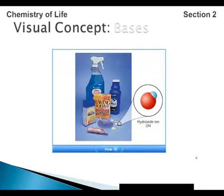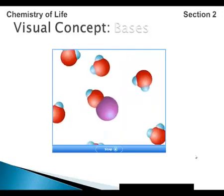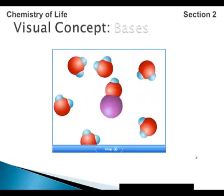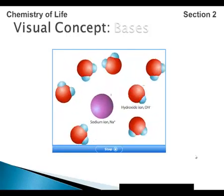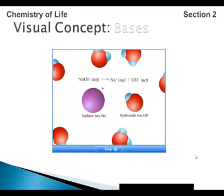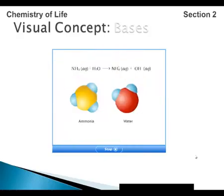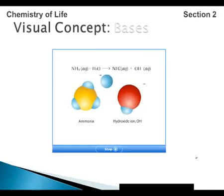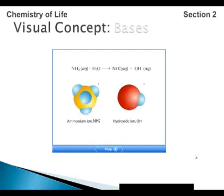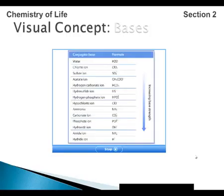Cleaners including soap and ammonia, baking soda, and antacids all contain bases. Bases give these products their slippery feel. Most bases are ionic compounds containing a hydroxide ion; because these bases are ionic, they dissociate to some extent when placed in solution. Hydroxide ions can also be formed when a base, such as ammonia, reacts to remove a hydrogen ion from a water molecule. Bases differ in strength — at the same concentration, a stronger base produces more hydroxide ions than weaker bases.